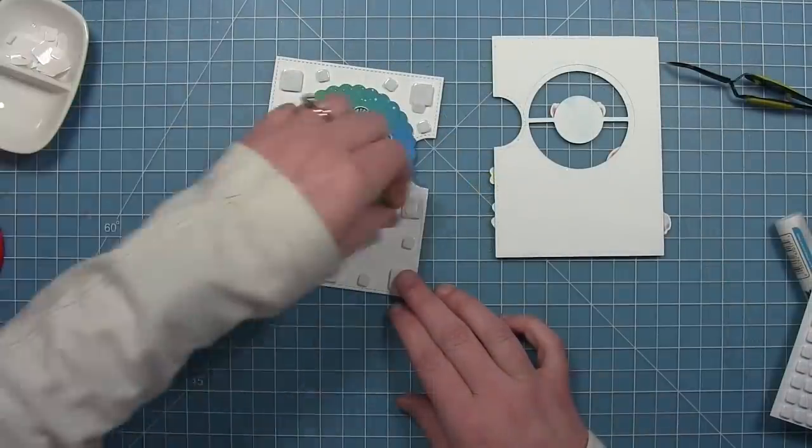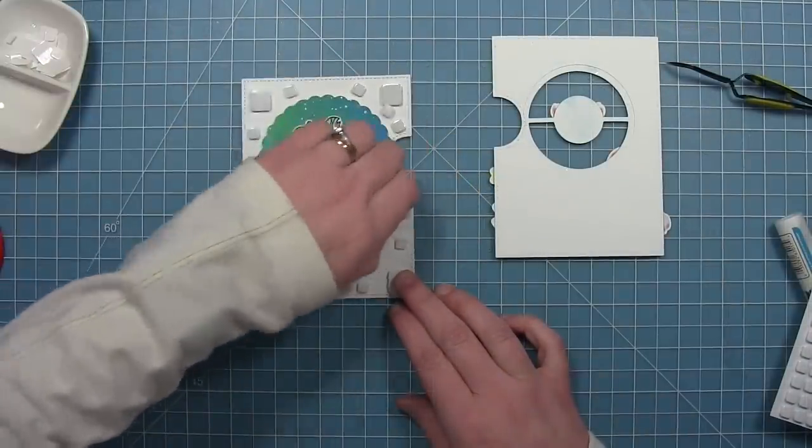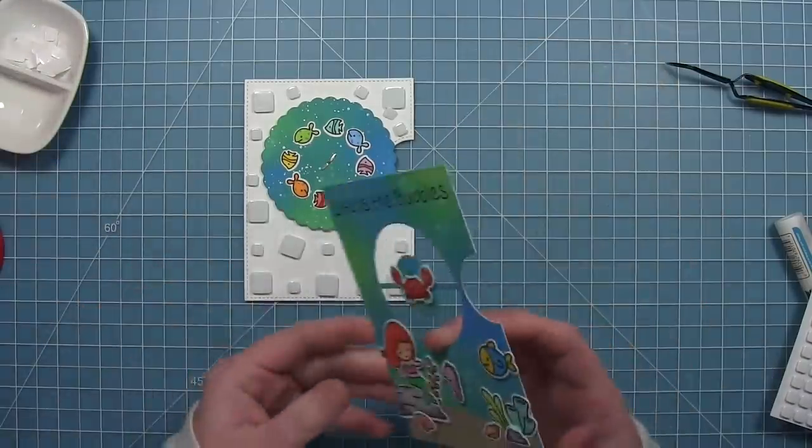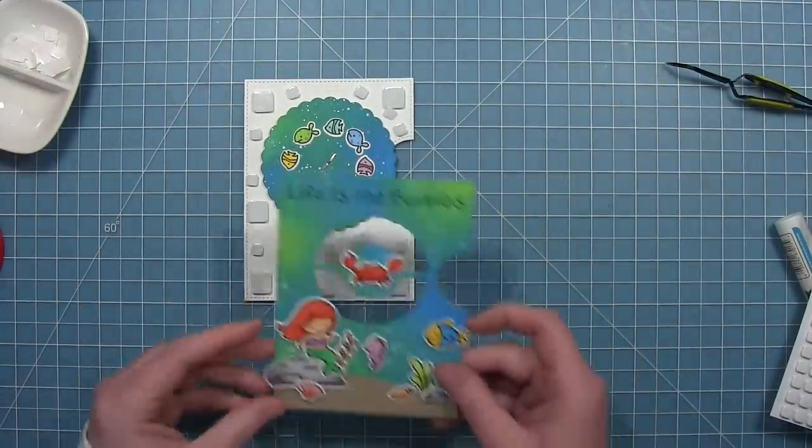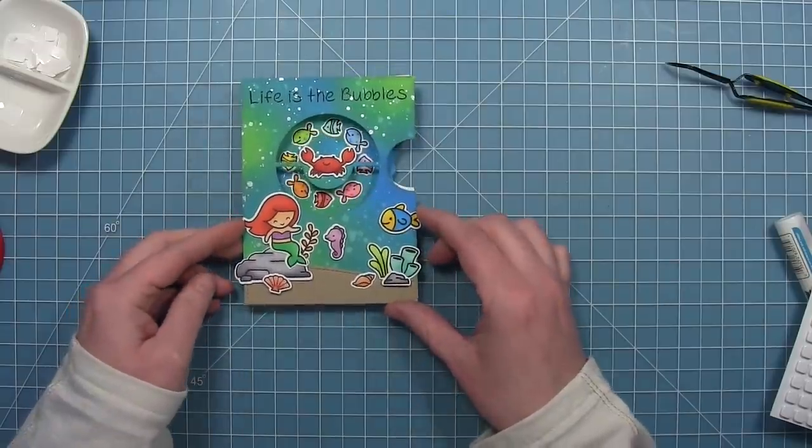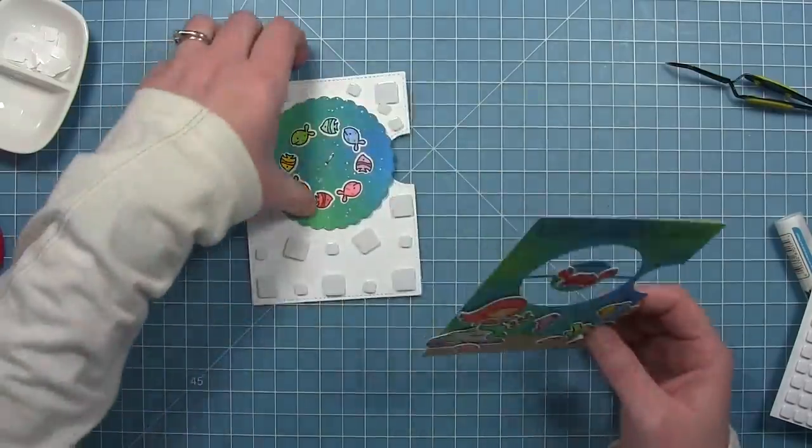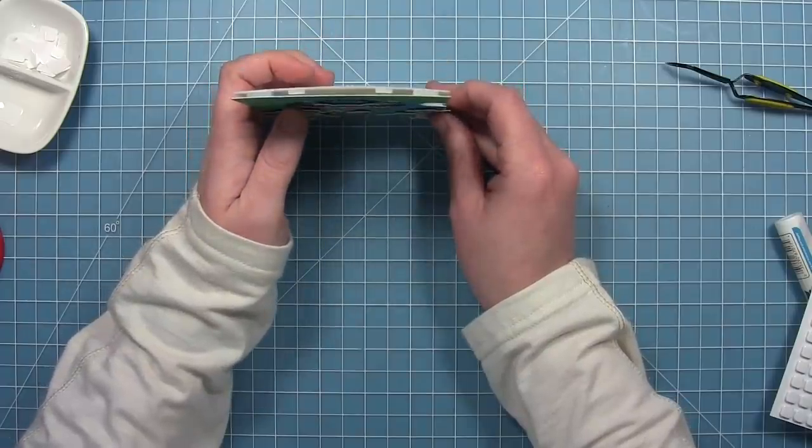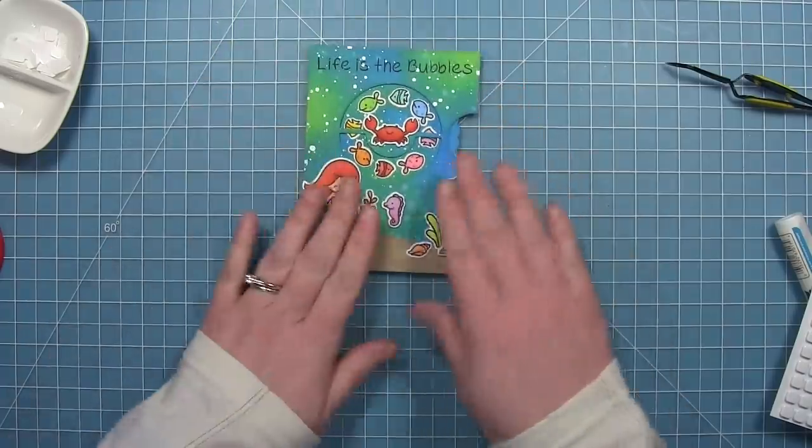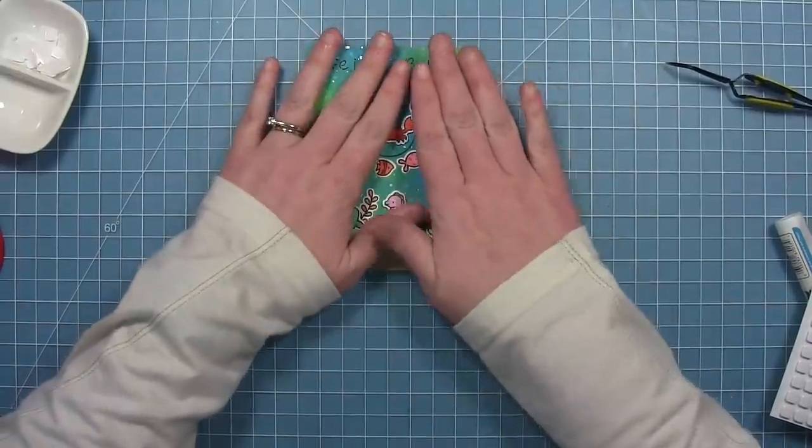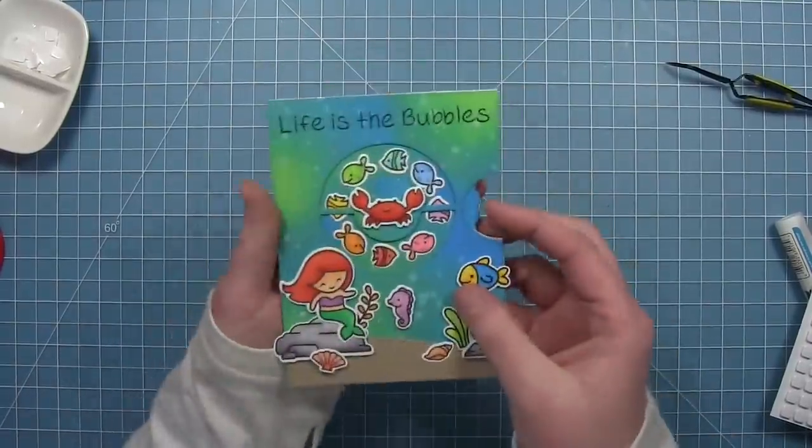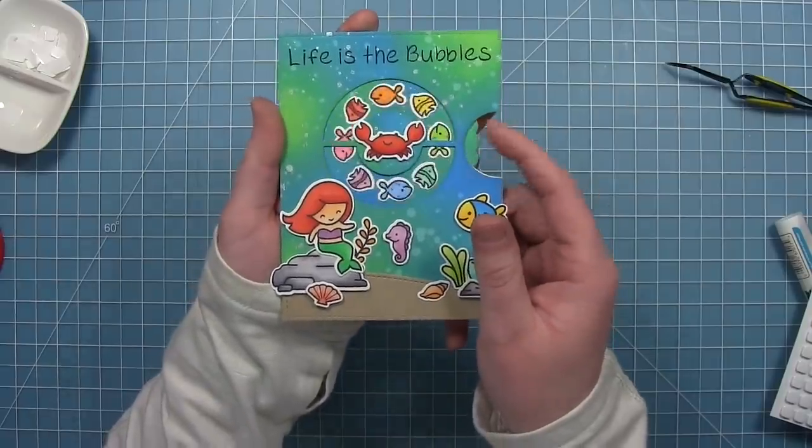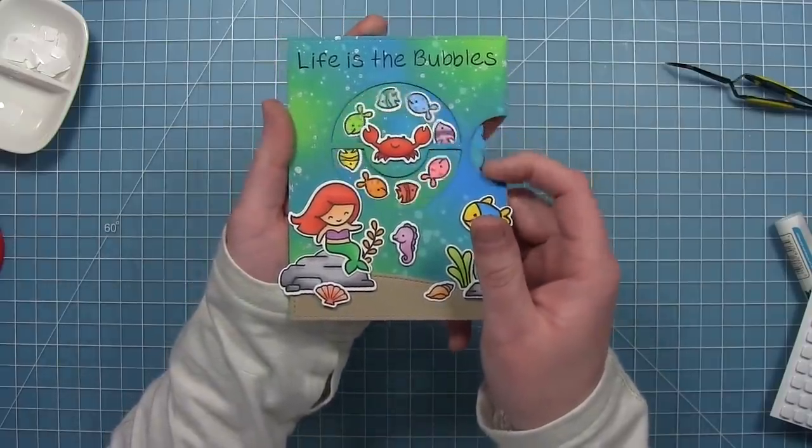So now that I've got all my pieces on the front panel, I've added a whole bunch of foam adhesive to this back panel, making sure to stay away from the wheel. That's why I add it to the back panel. And now I can just lay the front panel and line it right up. And I like to kind of stack it on the edge of my desk, make sure those bottom edges are lined up perfectly. And look how fun this is with those little fish that swing around my crab there in the middle.